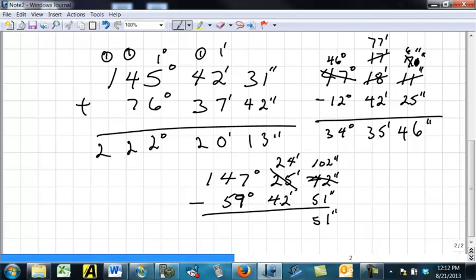Now, 24 is not enough to cover the 42, so we've got to take one away from the degrees and make 146 degrees. That brings over 60 minutes plus the 24 is 84 minutes. One degree is 60 minutes. 60 plus the 24 we had is 84. Now, we're subtracting 84 minus 42. That's 42.